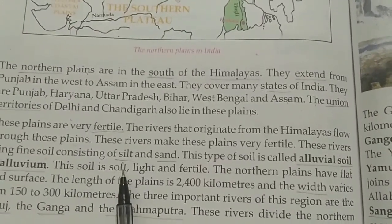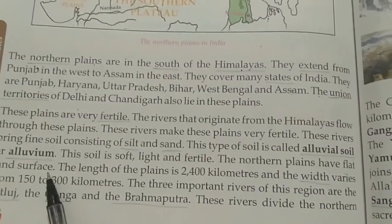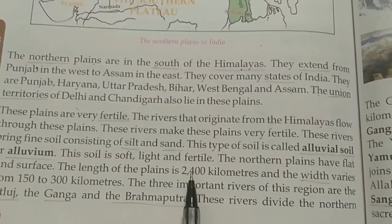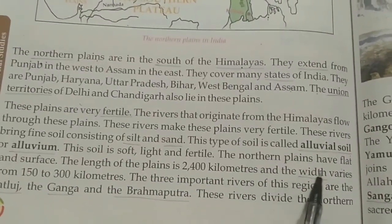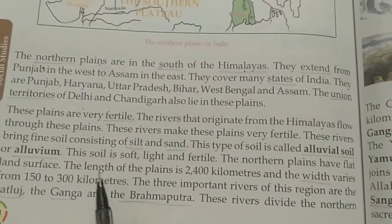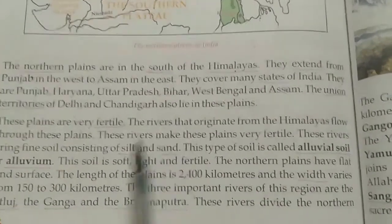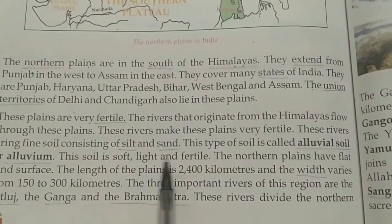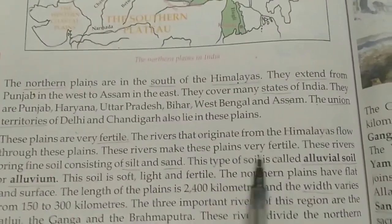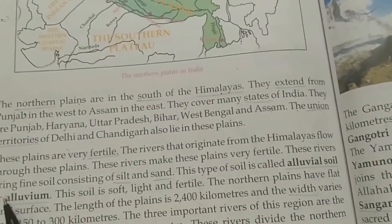So we are going to study from here in today's class. This soil is soft, light and fertile. The Northern Plains have a flat land surface. The length of the plains is 2400 km and the width varies from 150 to 300 km. The alluvial soil is very soft, lightweight and very fertile — this is the quality of alluvial soil. The Northern Plain has a flat land surface; it is not mountainous.